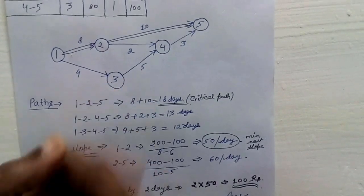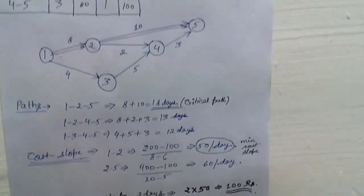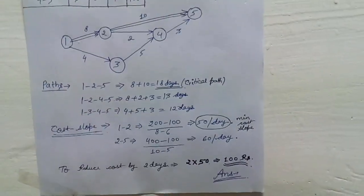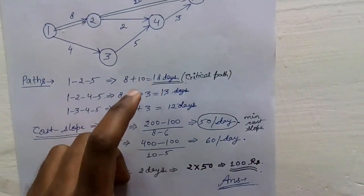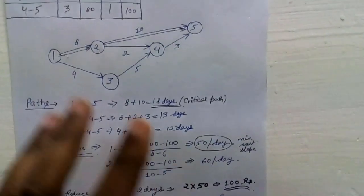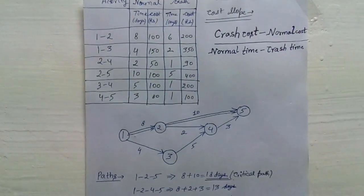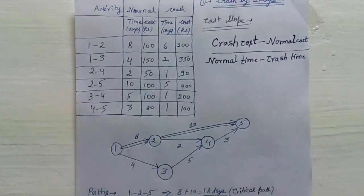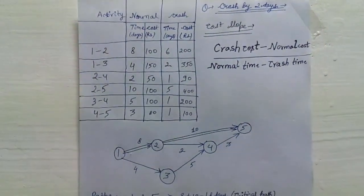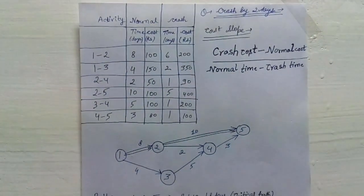So maximum you can complete the project in 16 days following this path, and the total additional cost for crashing is 100 rupees. If you found this video helpful, please like, comment, and share, and subscribe to my channel. In the next video I will be teaching more such questions. Till then, take care, bye bye, thank you.